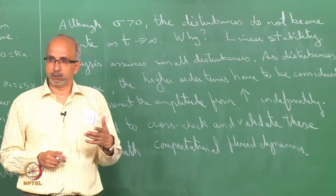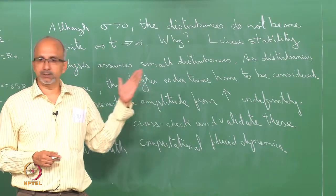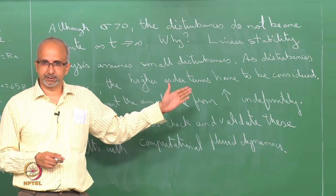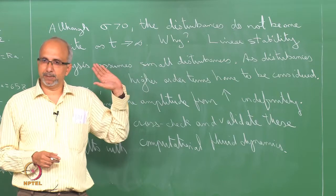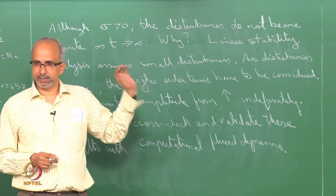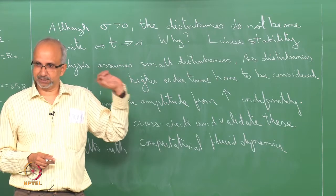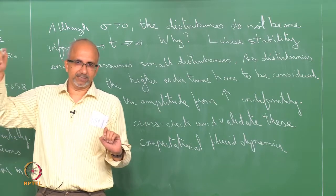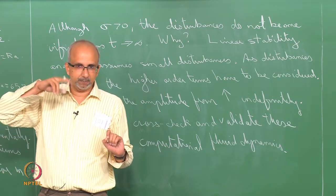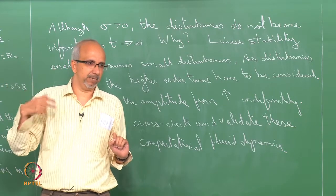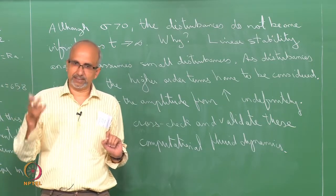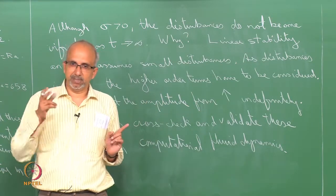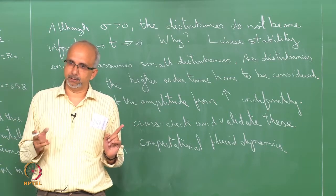What the linear stability analysis can do is give information about qualitative features of the flow, like the spatial periodicity — it will be spatially periodic and steady. How do we know it is steady? Because the imaginary part of the growth rate sigma is 0. If the imaginary part were nonzero, the disturbance would have an imaginary component e^(iσt), which is a periodic component expressible as cos(t) + sin(t).